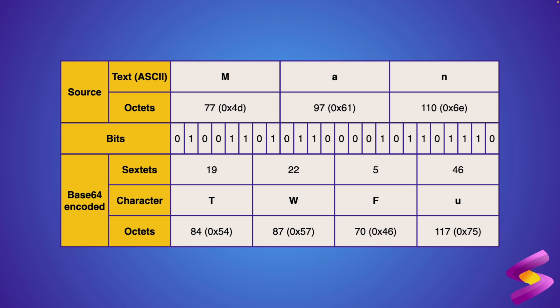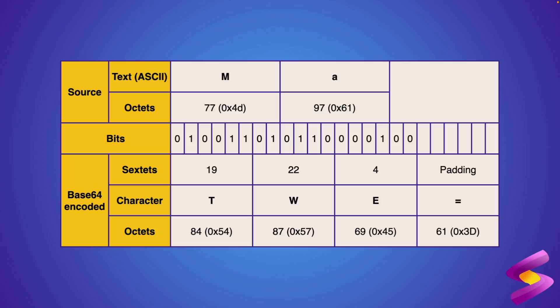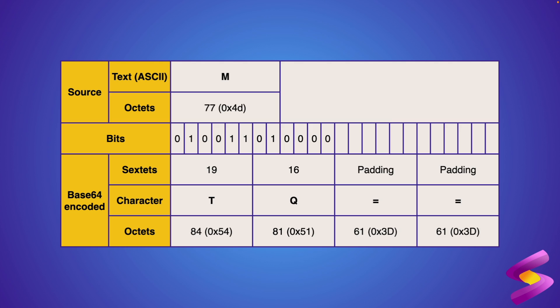What do we do if we're trying to encode something where the number of letters doesn't add up to three? If we have one, two, four, or five letters, we use padding. For example with just 'ma' — two letters, eight bits each — to finish the third Base64 character we pad with zeros, and the missing fourth character is padded with two equal signs. That's why you see equal signs in Base64 output.